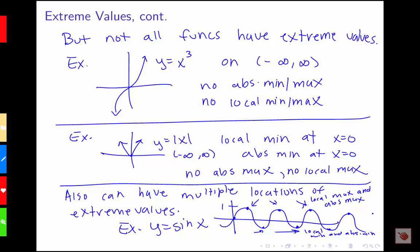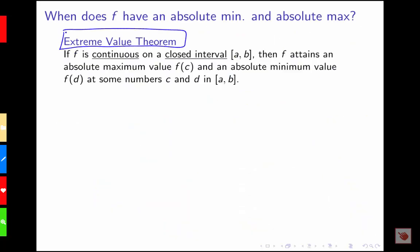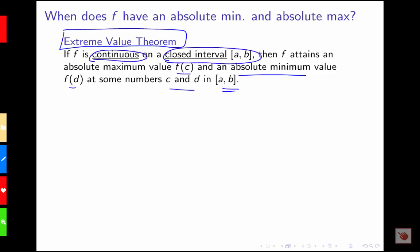We see that sometimes we'll have local extremes and sometimes we won't, and it's also possible for an extreme value to occur at multiple locations. So when is our function going to have an extreme value? That brings us to the extreme value theorem, which says that if our function is continuous on a closed interval, it attains an absolute maximum value and an absolute minimum value at some points over that interval. The two conditions are being continuous and being defined on a closed interval.